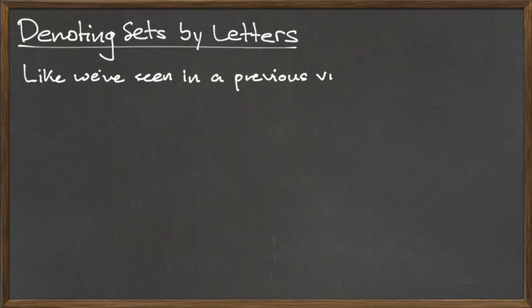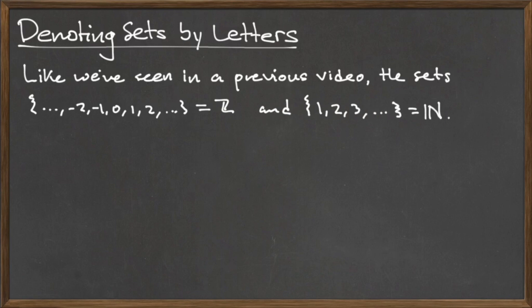In a previous video, we introduced the roster form notation for two important sets, the integers and the natural numbers. In roster form, the integers can be represented like this, which we usually abbreviate by a capital blackboard Z. Likewise, in roster form, the natural numbers can be represented like this, which we usually abbreviate to a capital blackboard N.